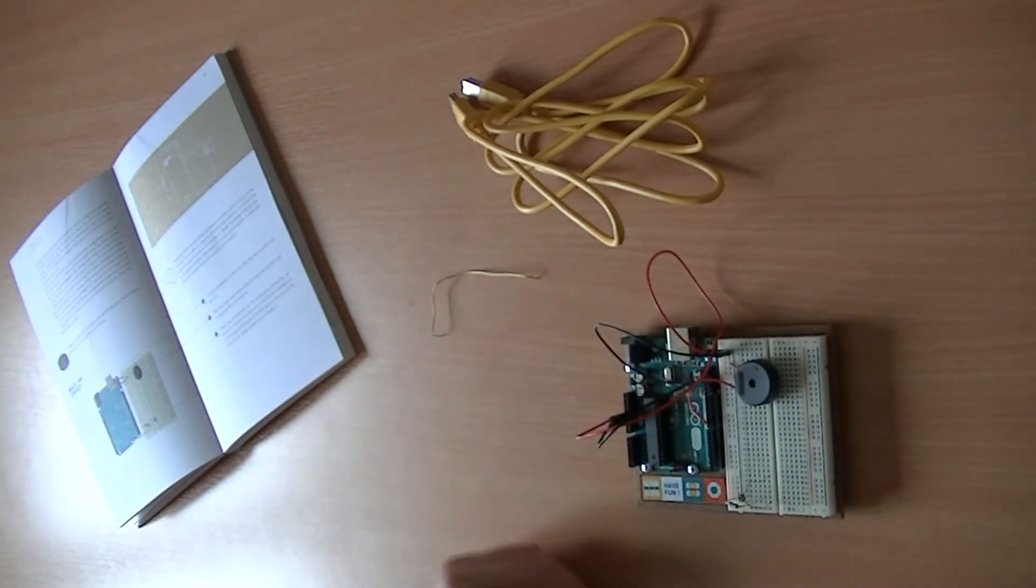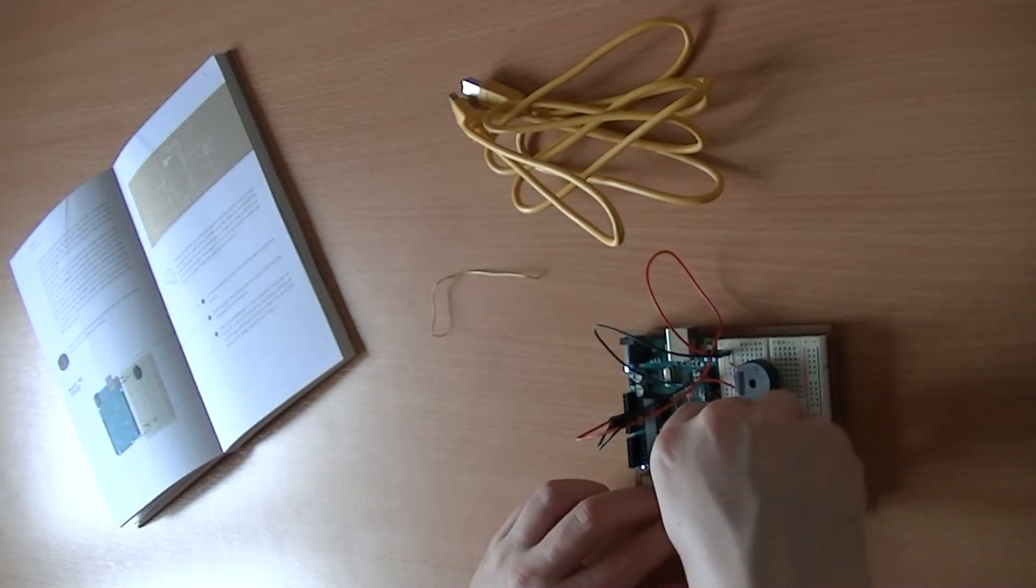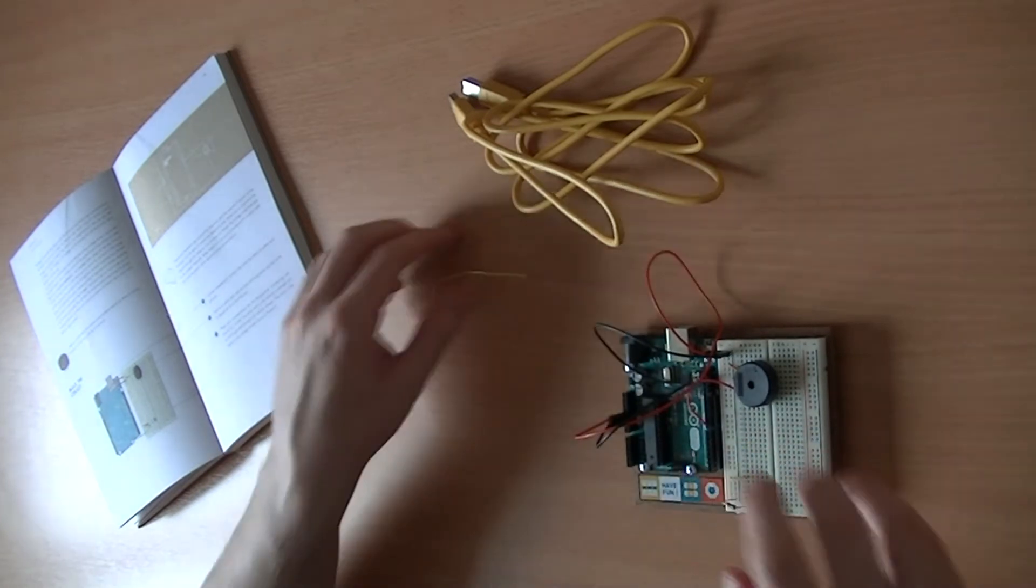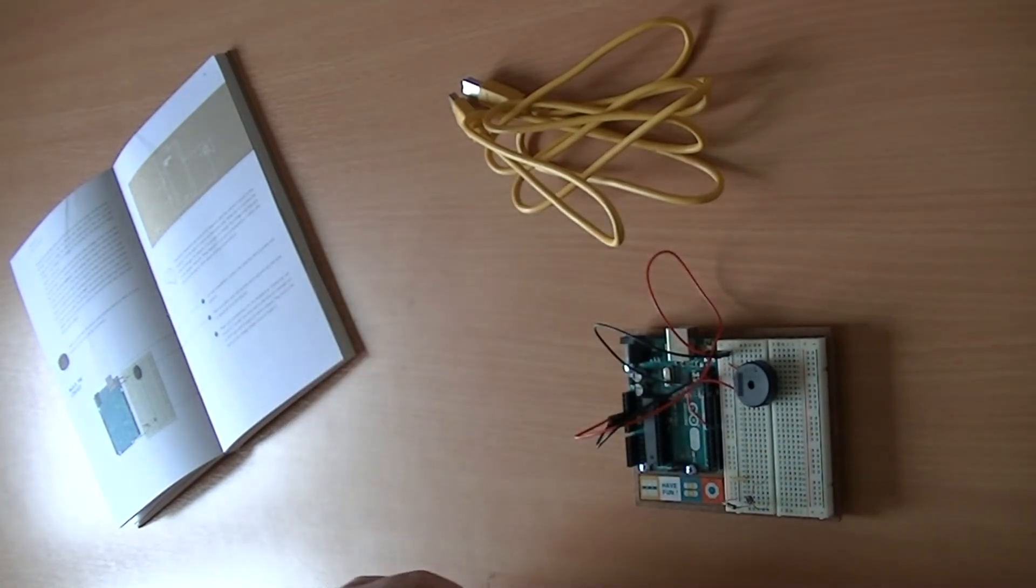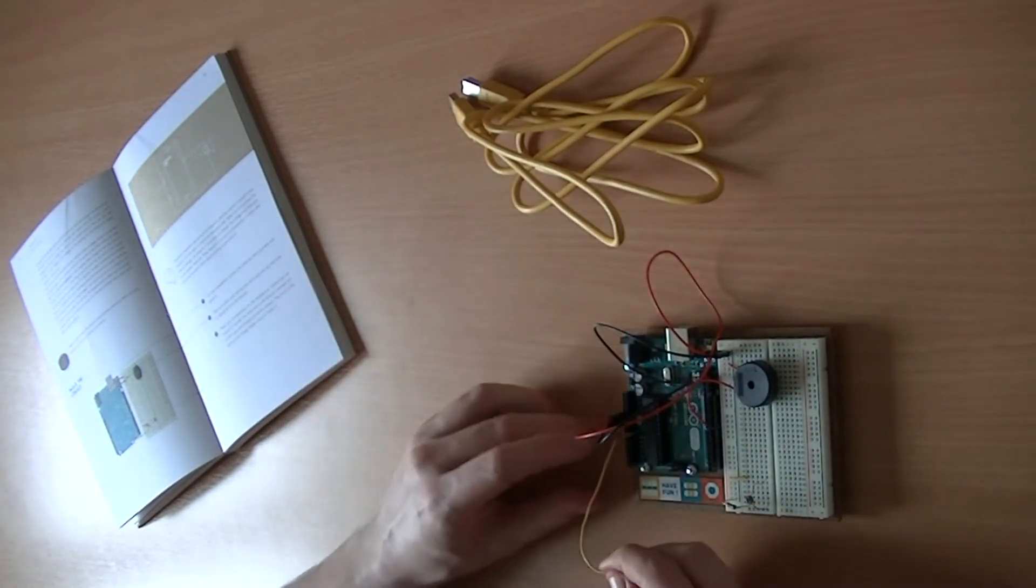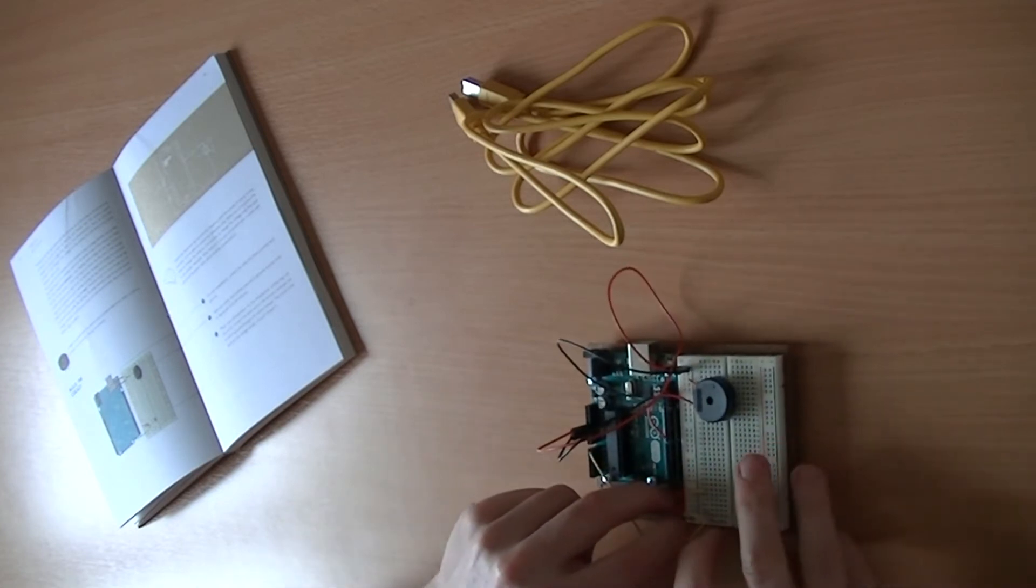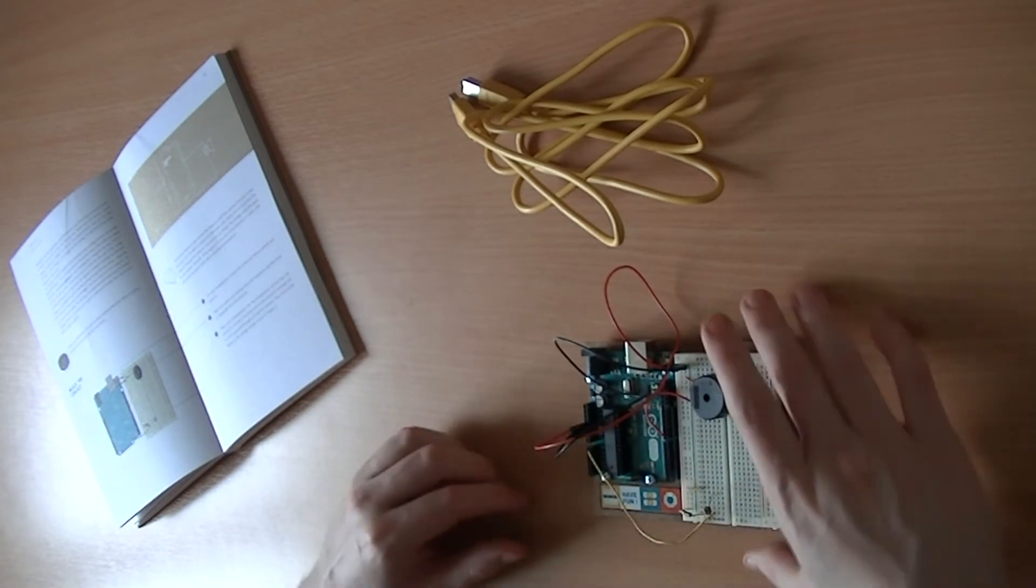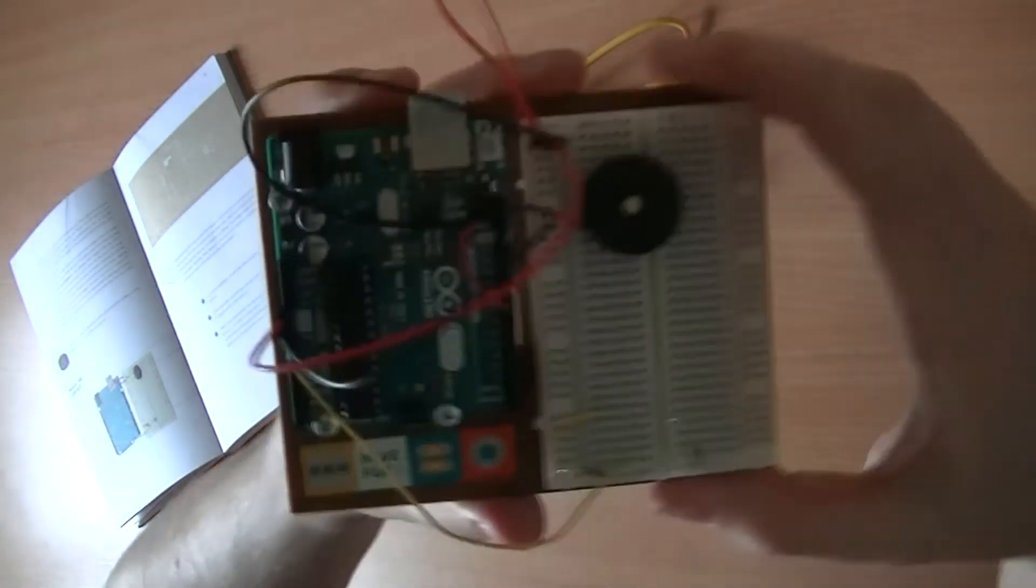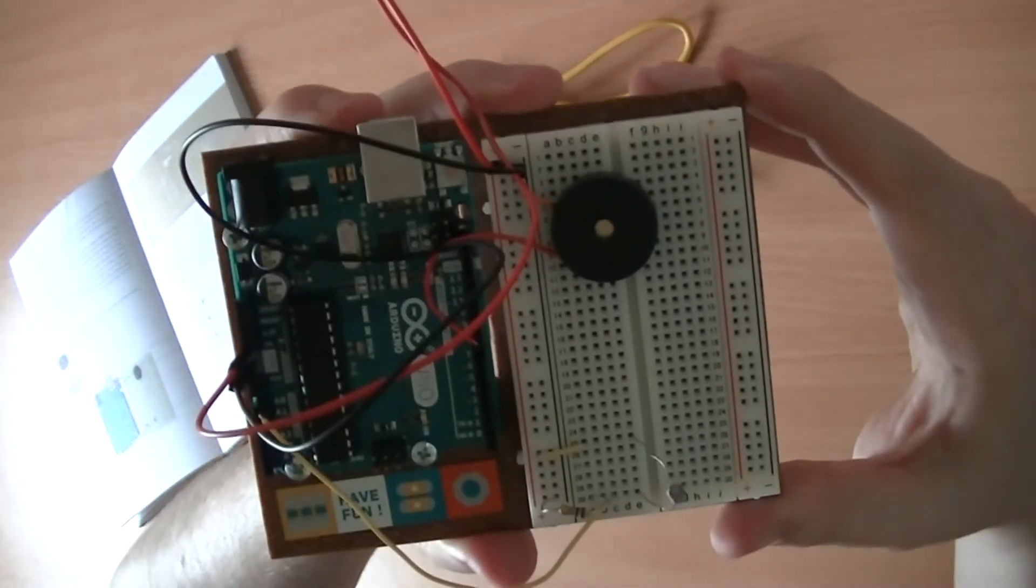Then we'll connect the other end of it across to the positive, so that will be our power. And then finally our analog in 0 will connect back up to the photoresistor, so column C there. And that's all there is to the actual circuit, it's quite a simple circuit.